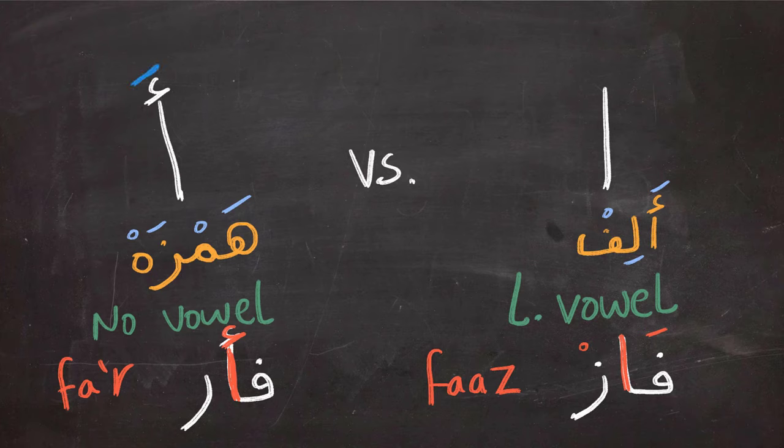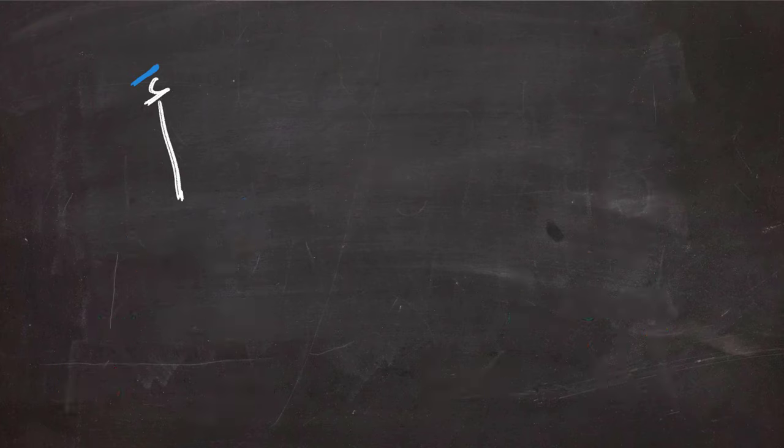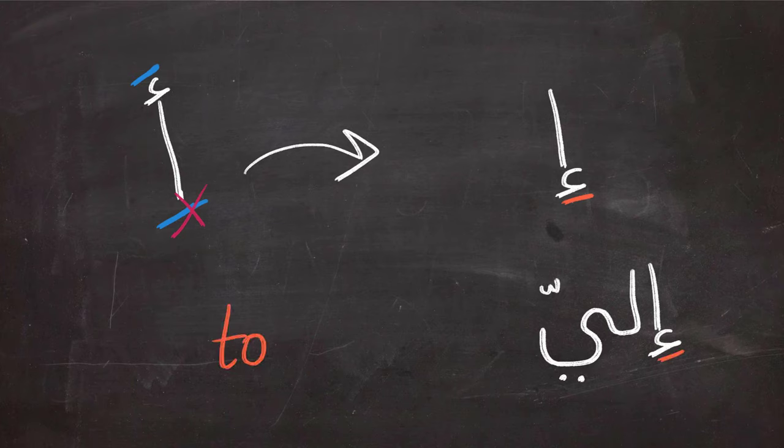As you can see, there is a fatha on top of the alif. We can also add dham, and this is also possible. But what if I want to add kasra? Can I just put it under the Hamza? The answer is no. If you have kasra under the alif, you're going to have to put the Hamza under the alif, as you can see on the screen, like in this example ilai, which means to me.